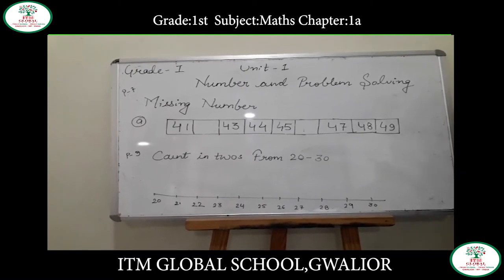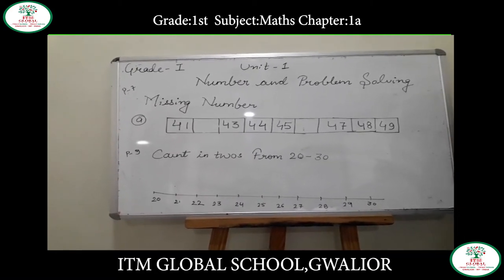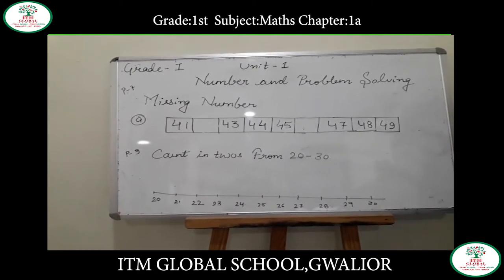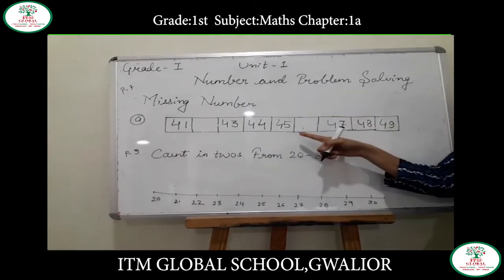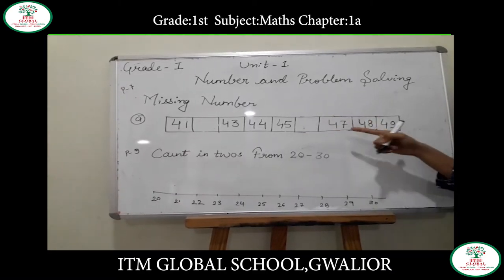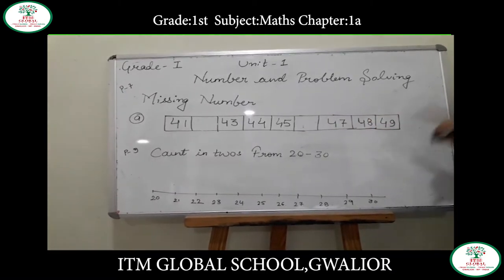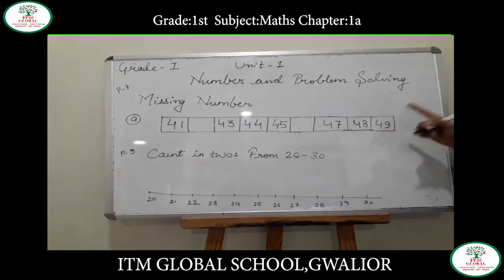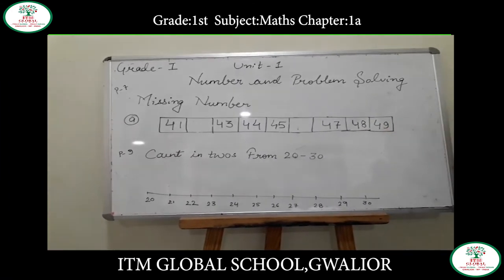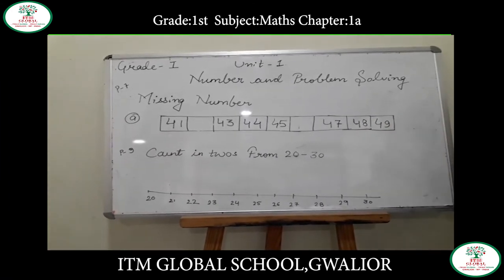The first question is: 41, blank, 43, 44, 45, blank, 47, 48 and 49. We need to find the two missing numbers in the sequence.